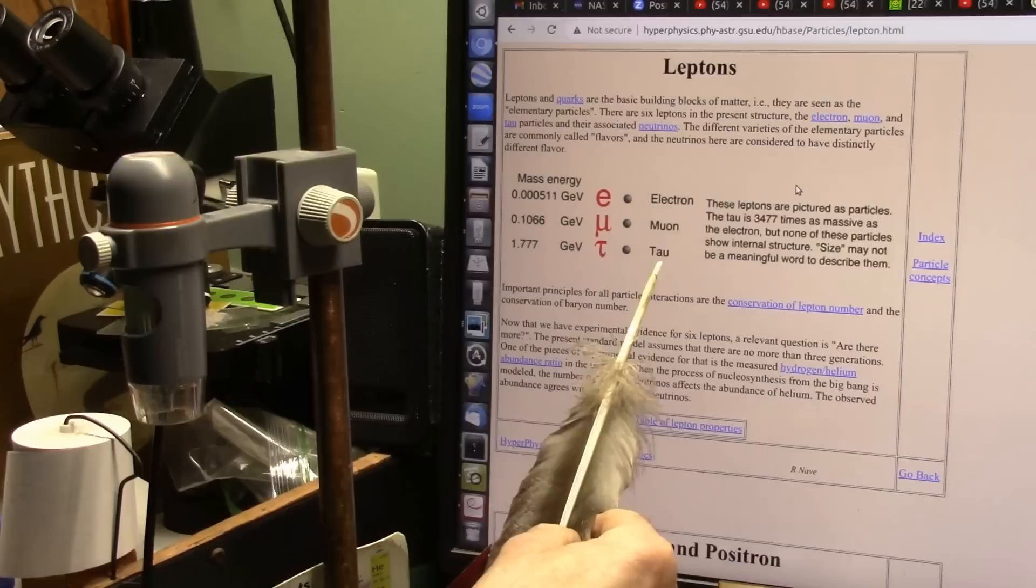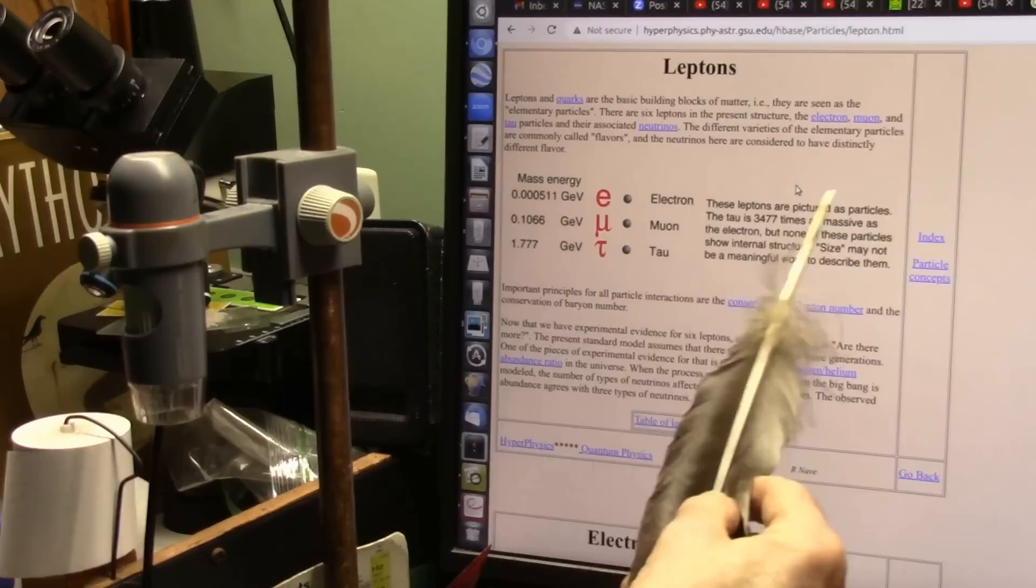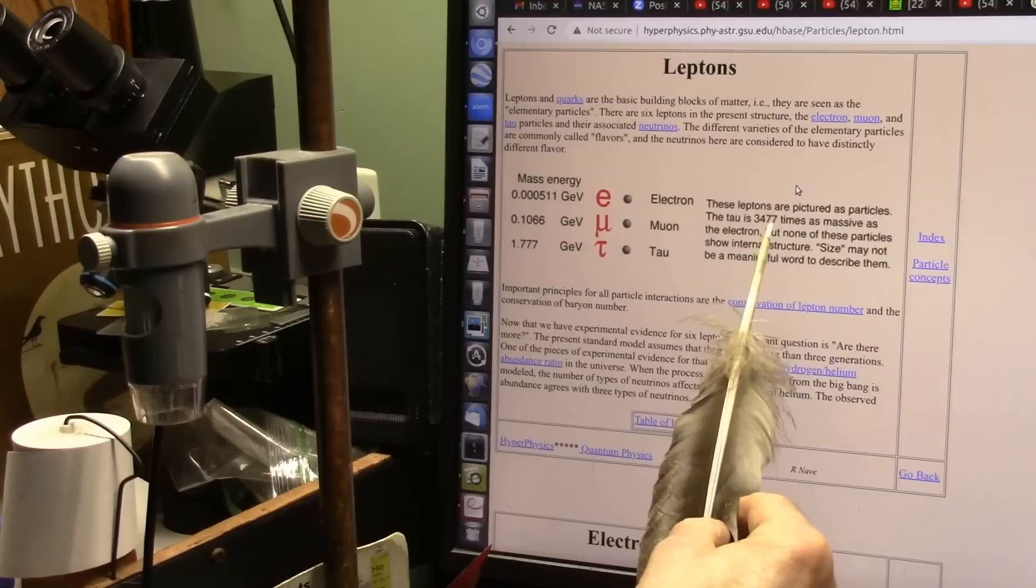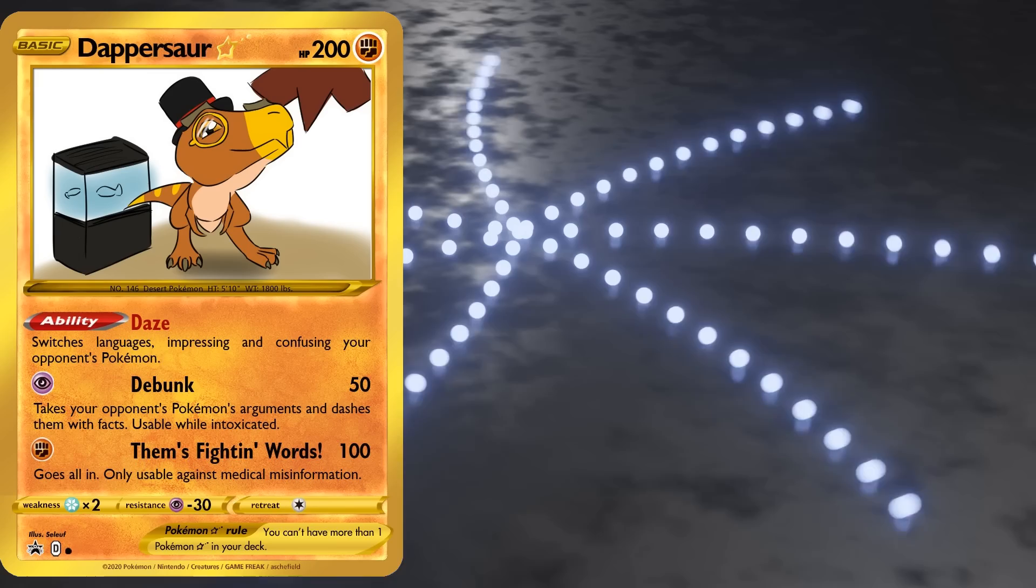Lepton. Now, these leptons are pictured as particles. And I agree, they're all particles, yes. The tau is 3477 times as massive as the electron.